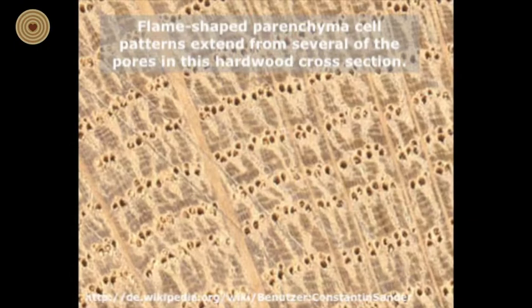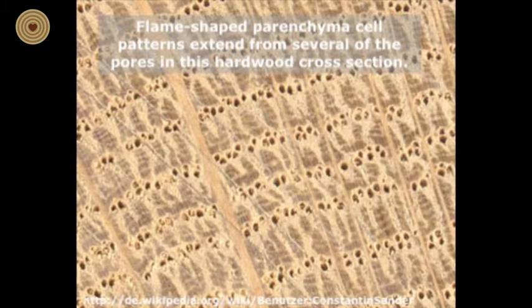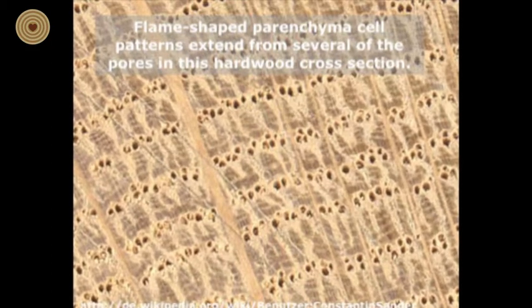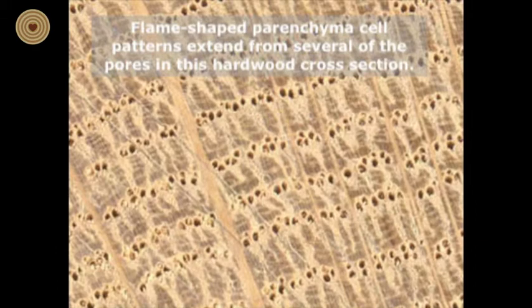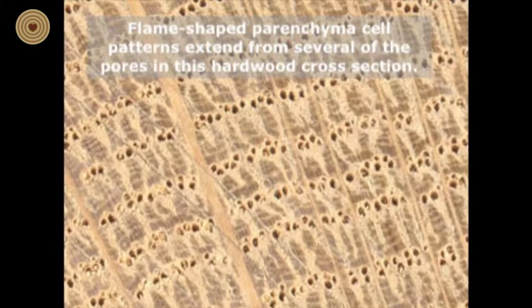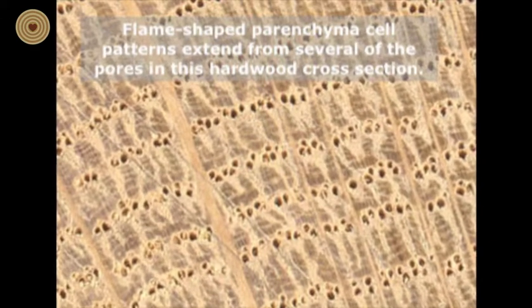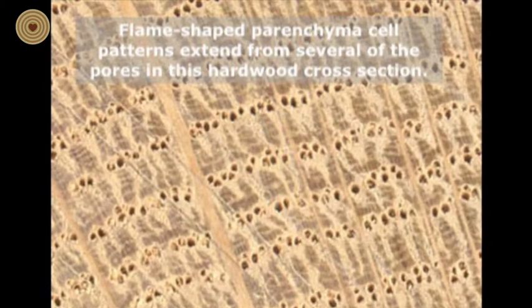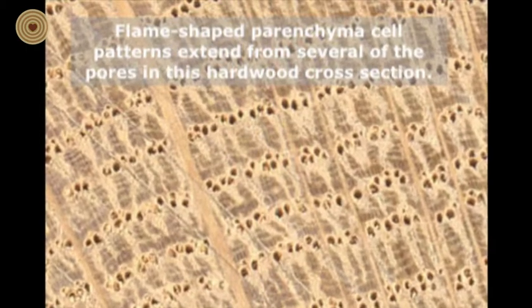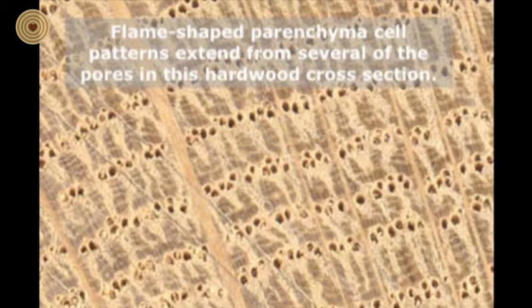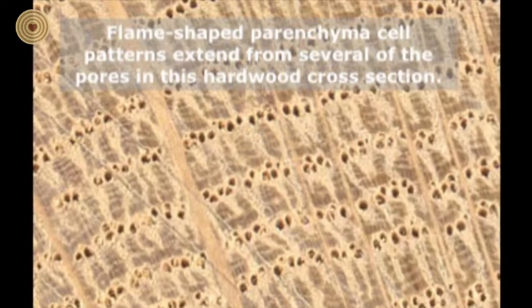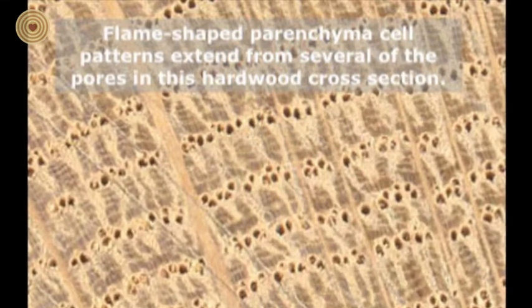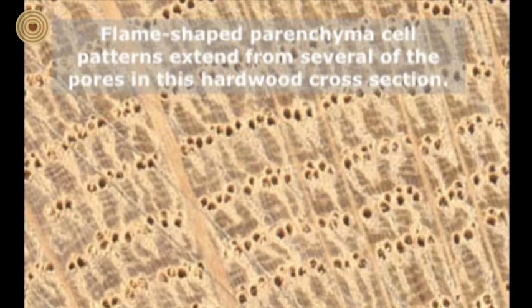In addition, there are many different types of parenchyma cells in hardwoods. The rays in hardwoods are composed completely of parenchyma cells, but parenchyma cells can also be distributed throughout the wood. As an example, parenchyma cells often form patterns surrounding the vessels in some hardwood species, and these patterns can help in the identification of some hardwoods.